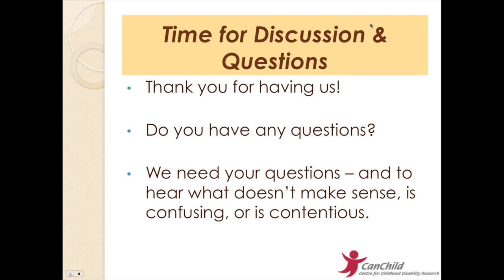We might have a group of children who are functioning in ACSF level 3 for a variety of reasons. One child might be very anxious, and if understood, management of that child's anxiety might help them function better. Whereas another child might be cognitively more limited and the intervention for that child might be quite different. So when we have kids functioning at a similar level, the explanations might be different.